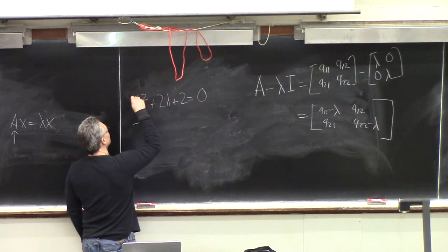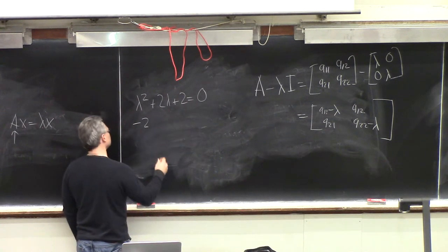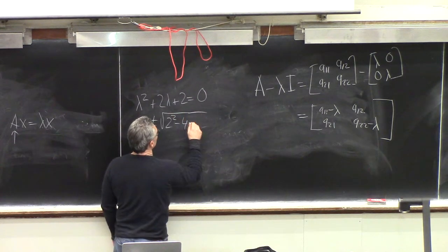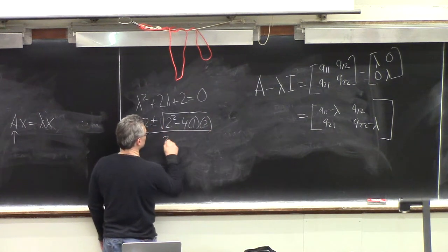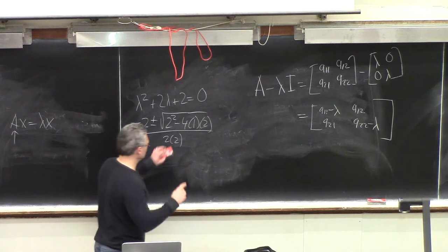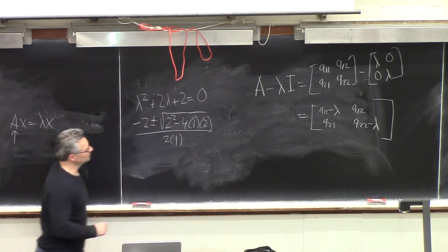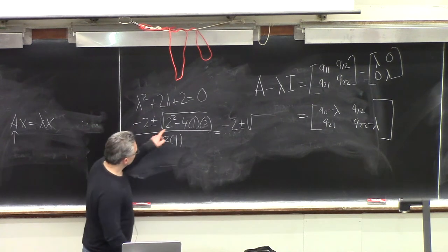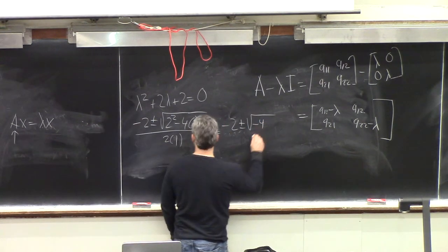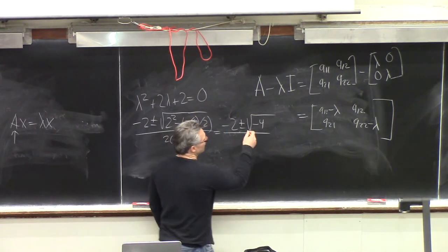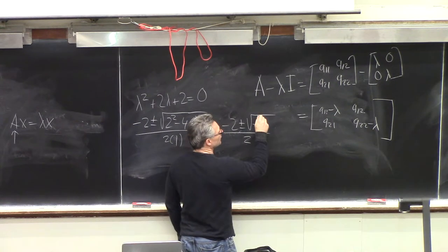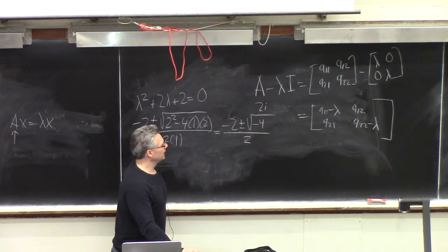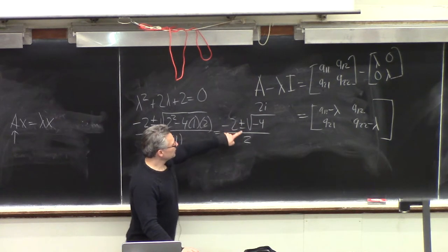So it's minus B — this is A, B, C — minus 2 plus or minus the square root of 2 squared minus 4 times 1 times 2 over 2A. This is minus 2 plus or minus the square root of 4 minus 8, which is minus 4, all over 2. And the square root of minus 4 is i times the square root of 4, which is 2i. So you have minus 2 divided by 2, plus or minus 2i divided by 2.